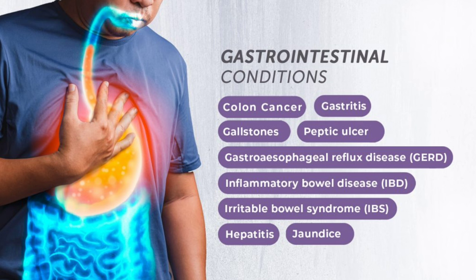MCQ: a 65-year-old man with easy fatigability, weight loss, and a left supraclavicular lump — think gastric cancer. A left supraclavicular lymph node is called Virchow's node, and this sign is called Troisier's sign. Right supraclavicular mass can indicate: esophageal cancer, lung cancer, or Hodgkin's lymphoma.